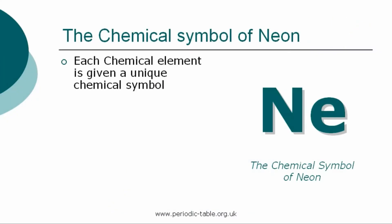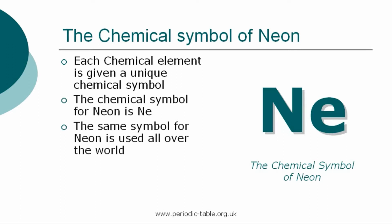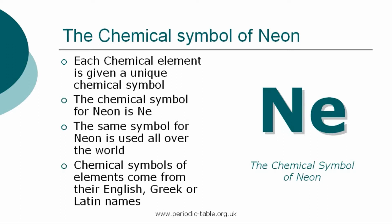Each chemical element is given a unique chemical symbol, which is used all over the world. The chemical symbol for neon is Ne. The chemical symbols of elements come from their English, Greek, or Latin names. The first letter of a symbol is always a capital letter, and if there are any subsequent letters, they are expressed in lowercase.